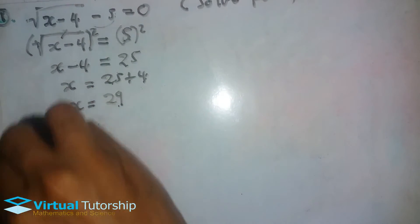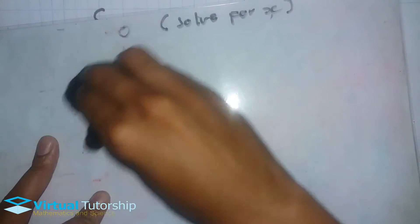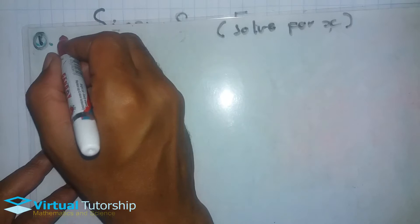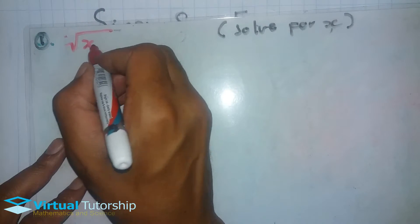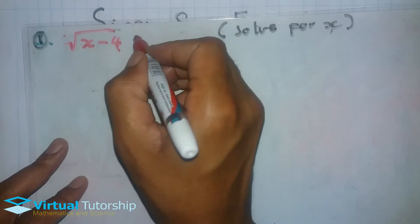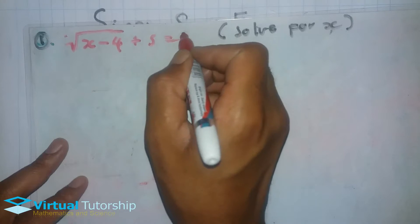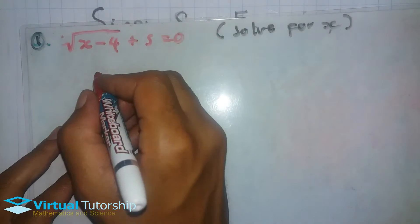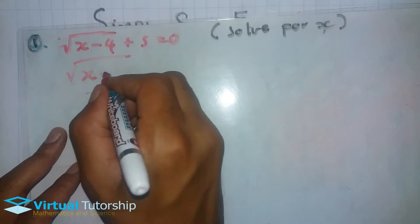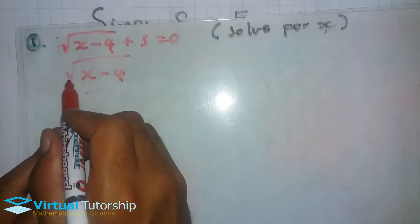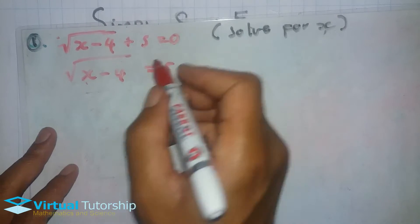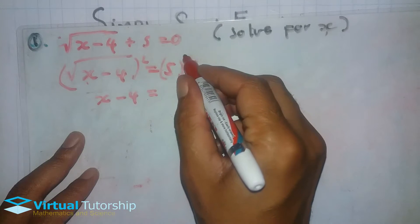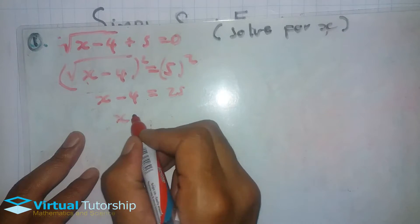Let's look at another example. This equation is similar to the previous one, but now it's: square root of (x minus 4) plus 5 equals zero. Using the same principle, we transpose the 5 — which is outside the square root — to the right-hand side, giving: square root of (x minus 4) equals negative 5. We then square both sides: x minus 4 equals negative 5 squared, which is 25.